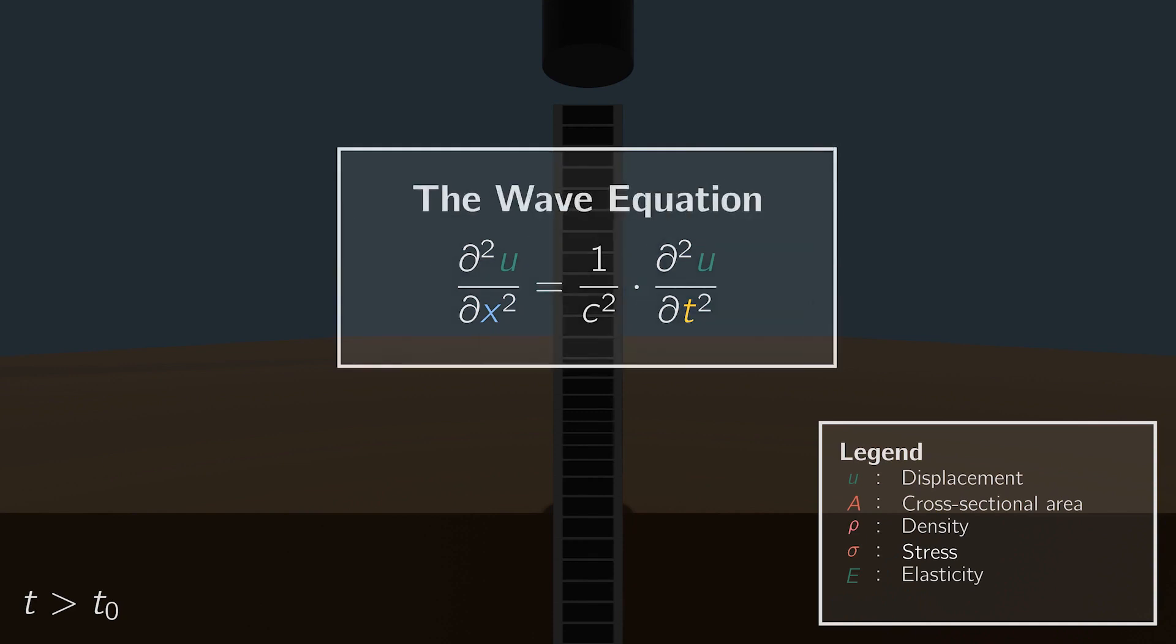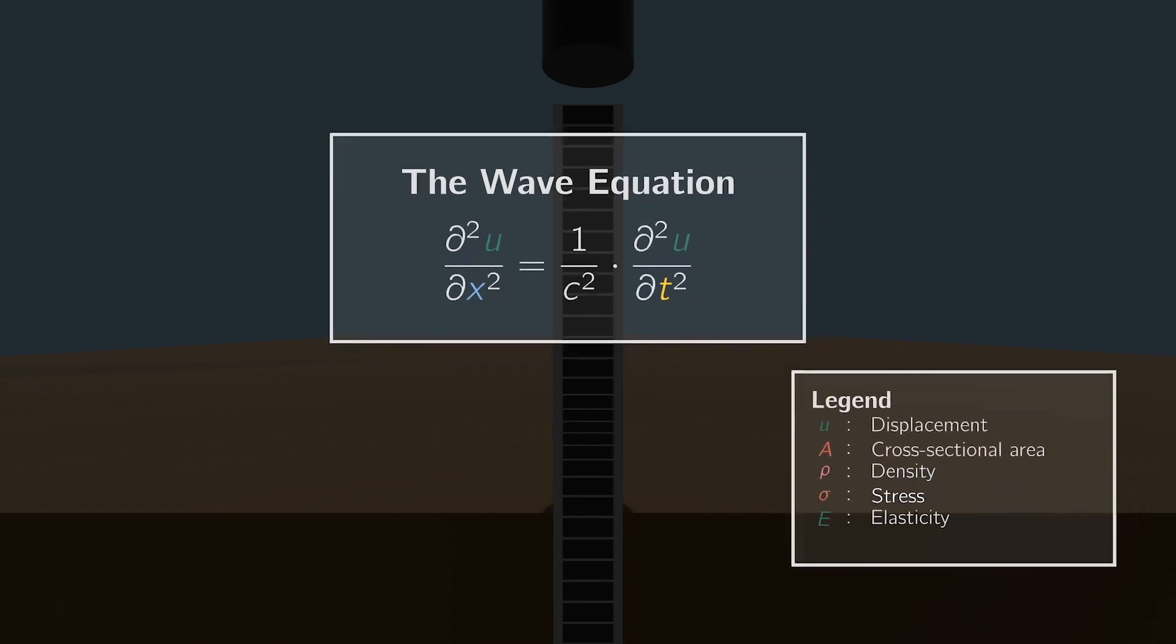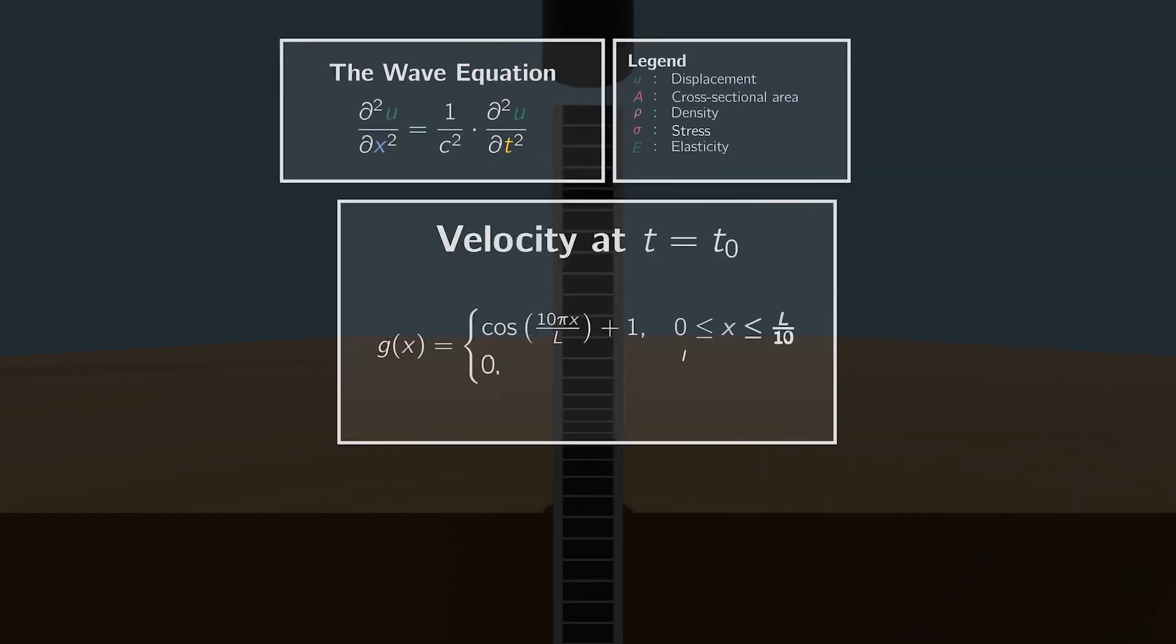In a bit, we will challenge you to solve the wave equation yourself. But before you can do so, some more information is needed. As mentioned in the beginning, our analysis will start directly after the hammer hits the pile. The velocity on top of the pile at t0 is described by the following step function.